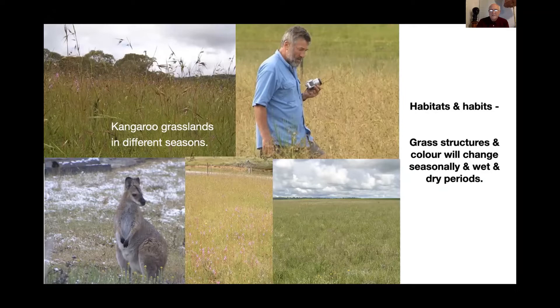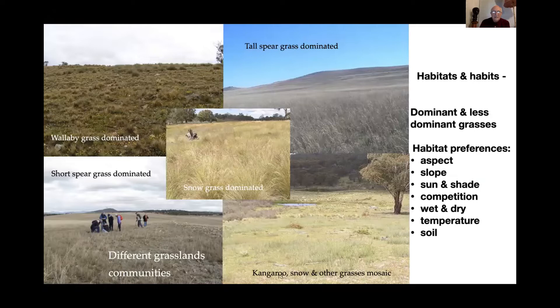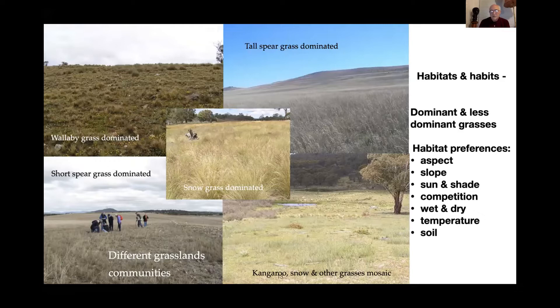Here are some examples of native grasses. Wallaby grasses — top left — tend to be small grasses that like generally dry conditions and do better on hillsides. There are two examples of spear grass: tall spear grass on the top right tends to like slightly damper conditions than short spear grass. Spear grasses tend to colonise areas where other grasses have disappeared. Some grasses are colonisers and some are slow and steady and need more time to take over.